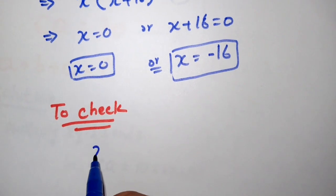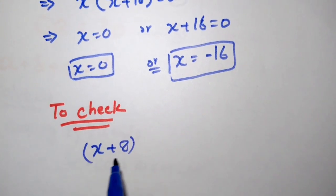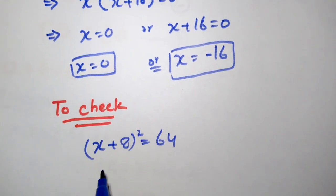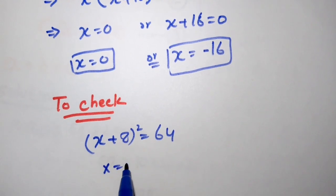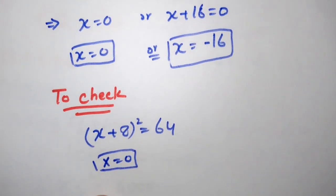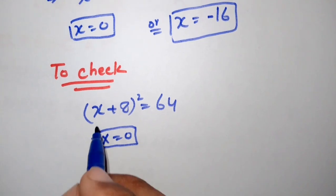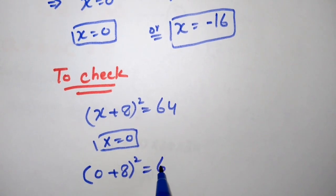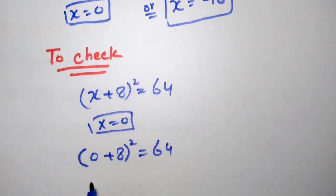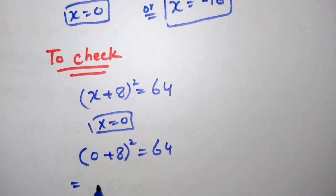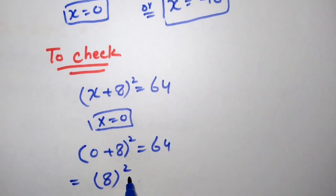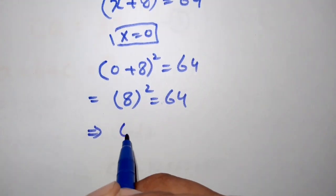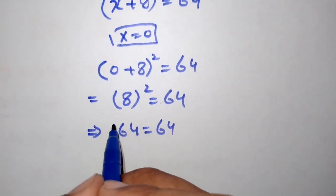The question is (x + 8)² = 64. First, we put x = 0: (0 + 8)² = 64, which gives 8² = 64, and 64 = 64. This is verified.